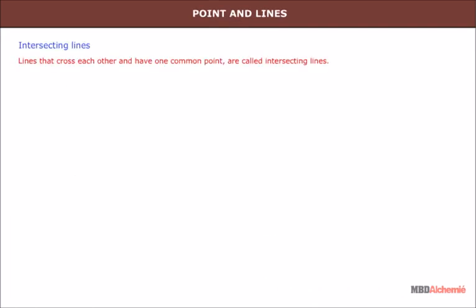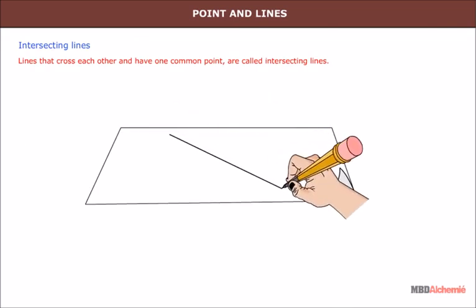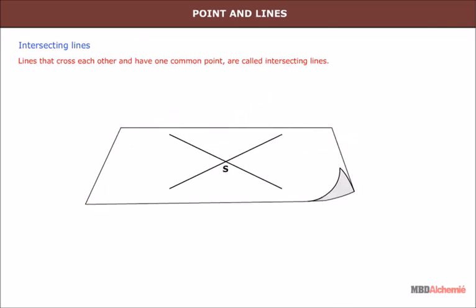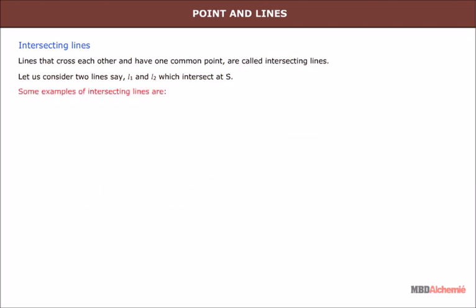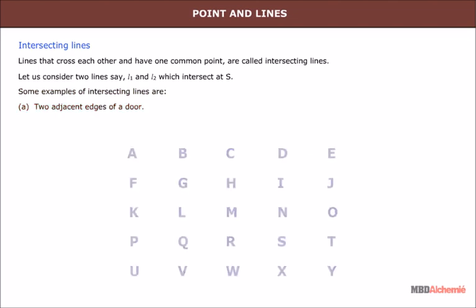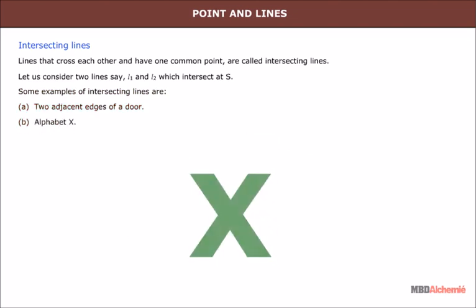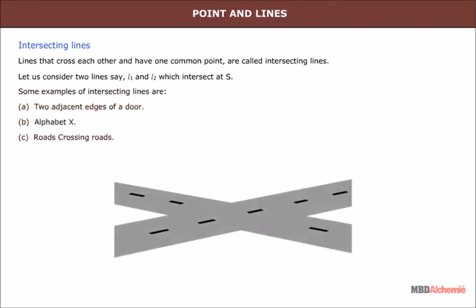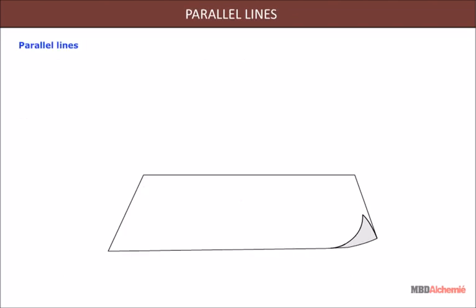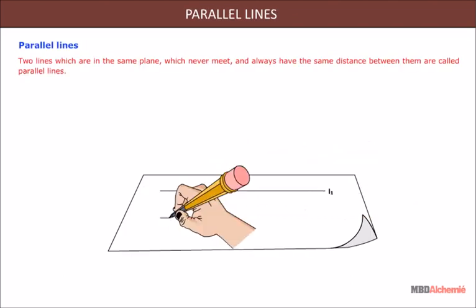Intersecting lines: lines that cross each other and have one common point are called intersecting lines. Consider two lines L1 and L2 which intersect at point S. Some examples of intersecting lines are two adjacent edges of a door, the alphabet X, and crossing roads.